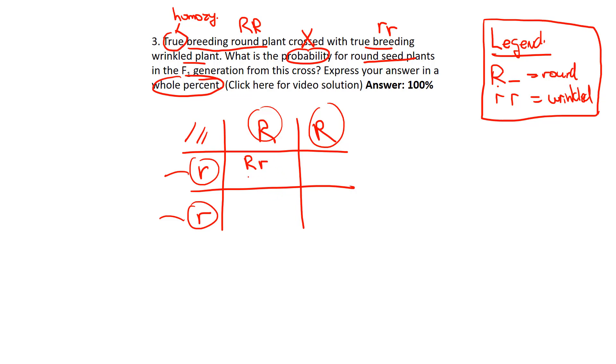Keep filling them in. I think we've done that enough now that people understand how to fill the Punnett square in. You can see that all of these offspring are going to be round.